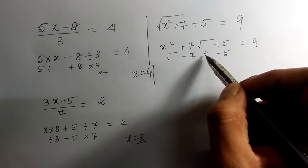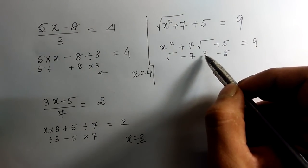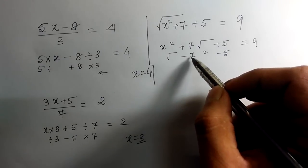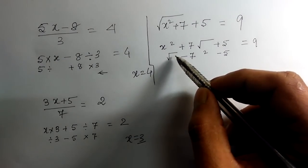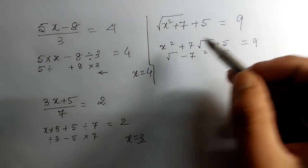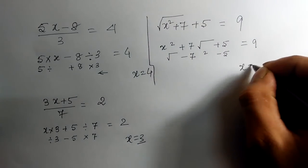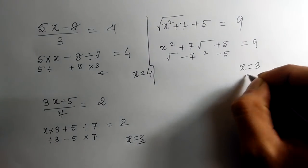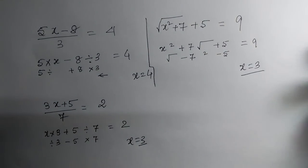So: 9 minus 5 is 4, 4 squared is 16, 16 minus 7 is 9, and the square root of 9 is 3. So x = 3.